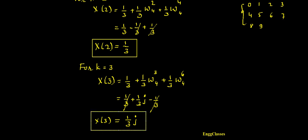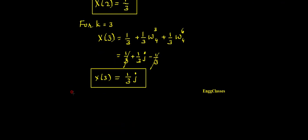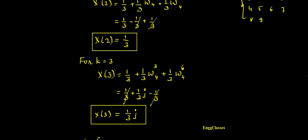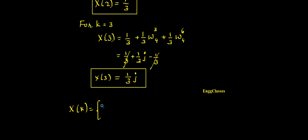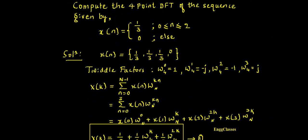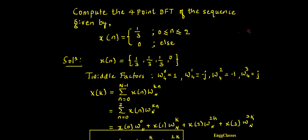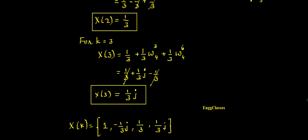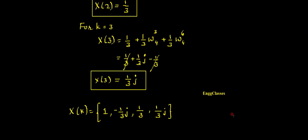So in this way I have found the four DFT coefficients. To summarize: X(k) = {1, -j/3, 1/3, j/3}. In this way I have found the 4-point DFT of the given sequence. I hope you have understood — I have explained everything step by step. If there are any doubts please let me know in the comment section. Thank you so much for watching.